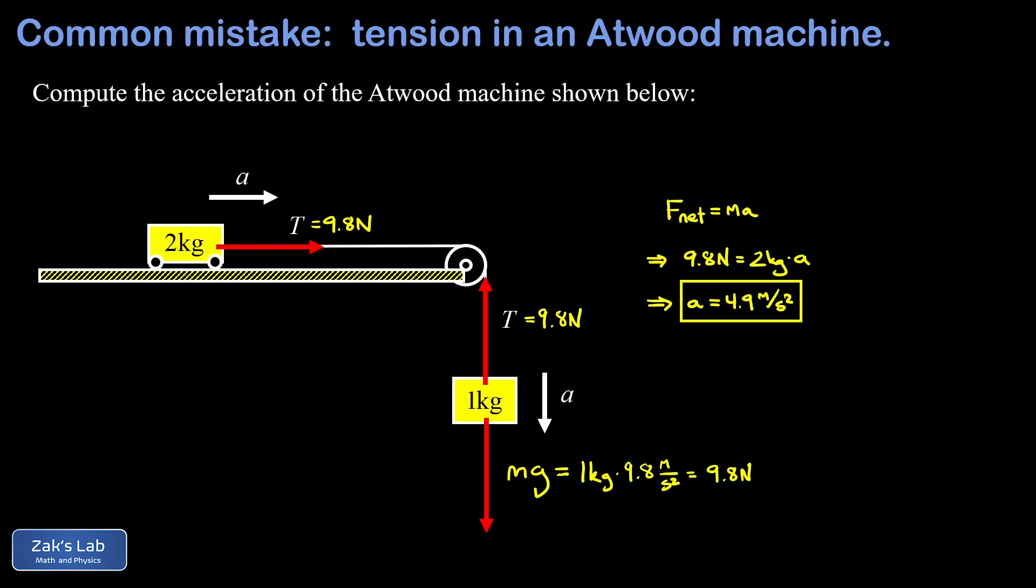And what we're looking at here is a very common incorrect solution to the problem. So what the student did here is start by saying the force of gravity down on the one kilogram mass must be mg. They plug in the numbers and they find out it's 9.8 newtons.